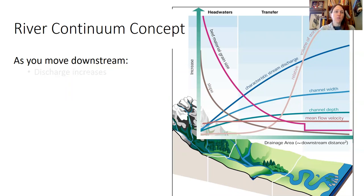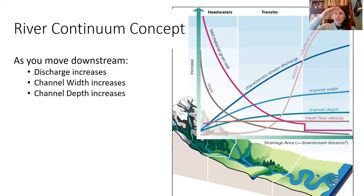As you move downstream, you tend to see discharge increasing. So how much water is moving past a given point over a period of time increases. Rivers carry more and more water as more tributaries contribute to their flow. Channel width tends to increase. Channel depth tends to increase.